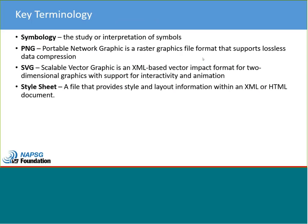Before we get too far, let's cover a few pieces of key terminology. Symbology is the study or interpretation of symbols. Both PNG and SVG are file formats that make our symbology available across mapping platforms and environments. And a style sheet is a file that allows people to pull in the full symbol set by category.